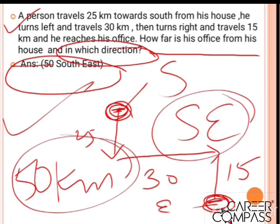That concludes today's topic. Tomorrow we will do more questions on this topic and cover the second part - shadow directions. Shadows play a very important role in direction questions and can confuse students, but there is nothing confusing about it. It is an easy topic like directions; there are some golden rules to remember, and when we practice, we will automatically understand and memorize them.